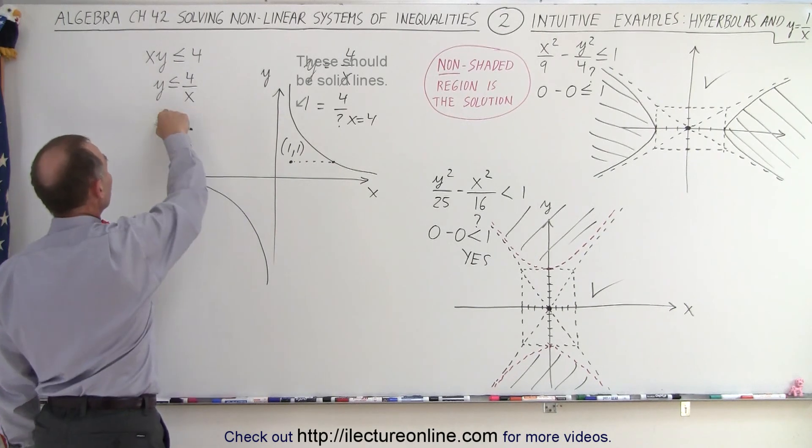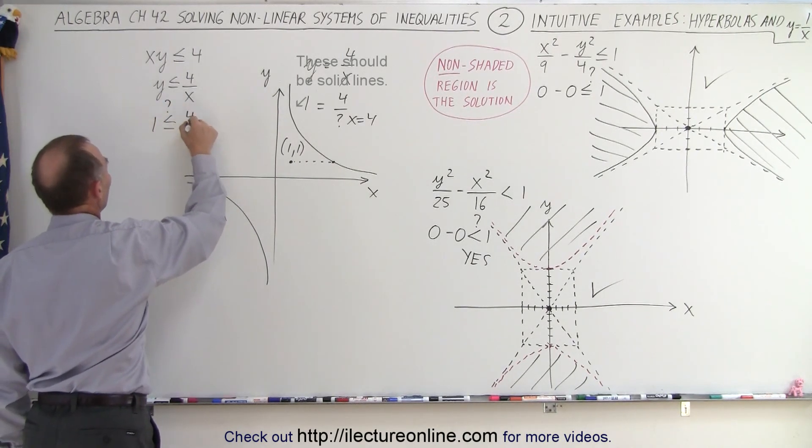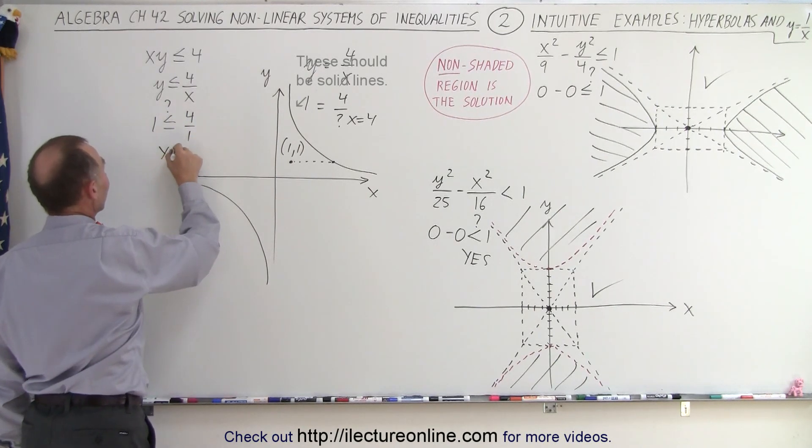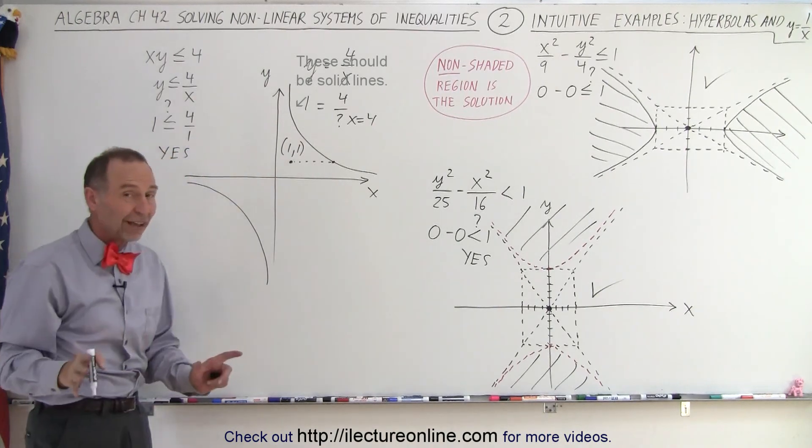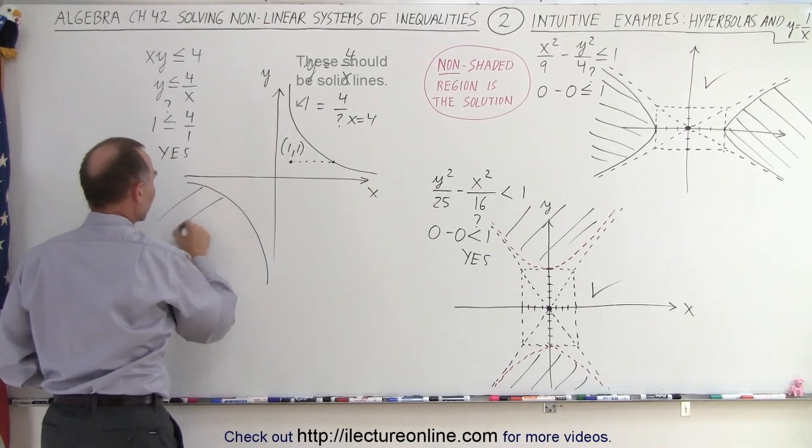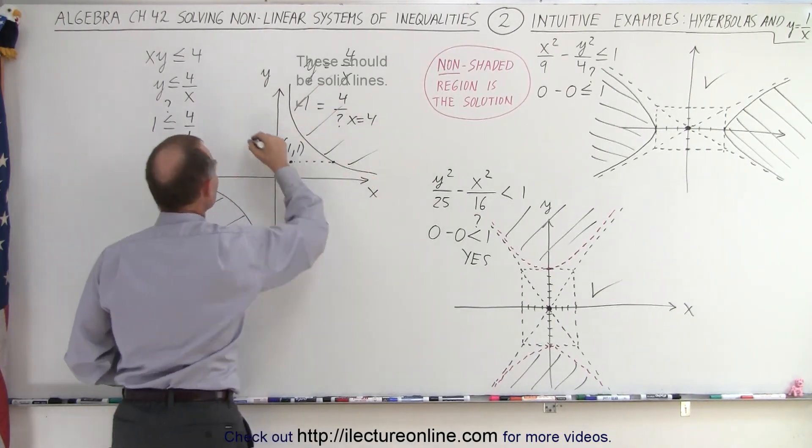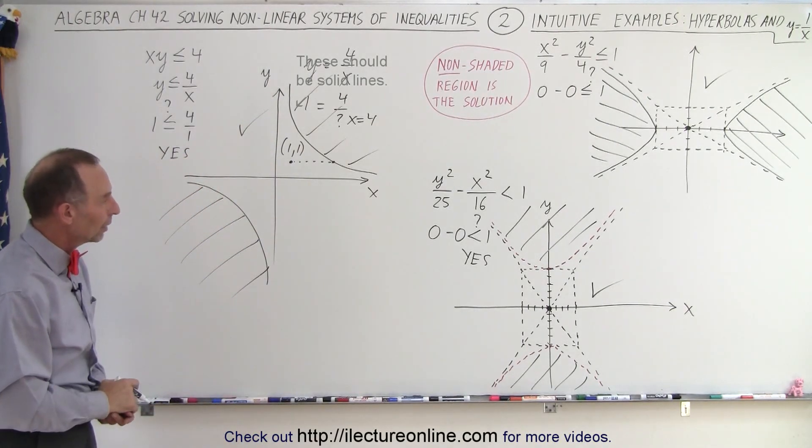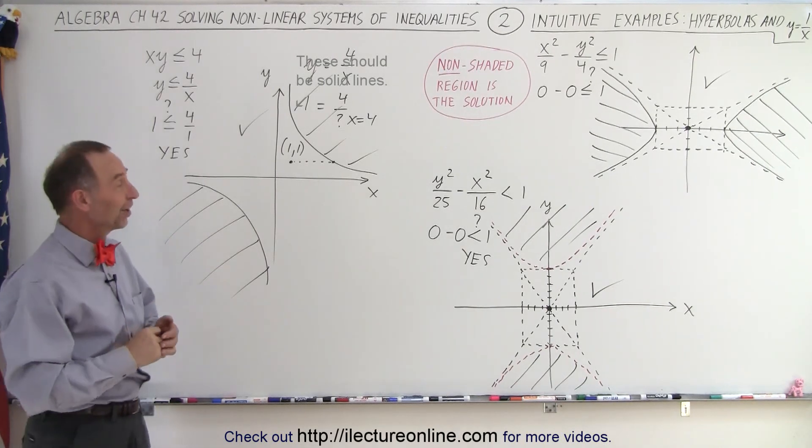Now let's plug that into our inequality. Is 1 less than or equal to 4 over 1? The answer is yes because 1 is less than 4, which means we picked the point in the region that satisfies the inequality. The other side does not, so we get rid of those sides. The area between the two curves is the solution to that inequality, and that is how it's done.